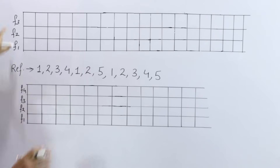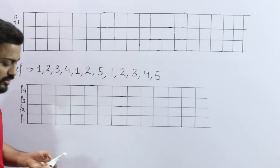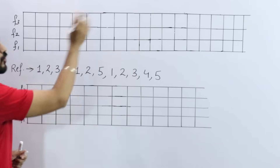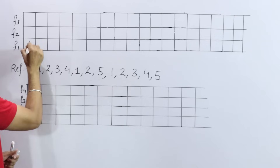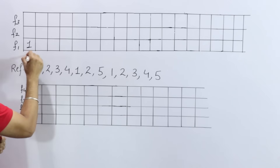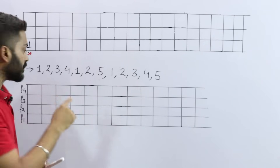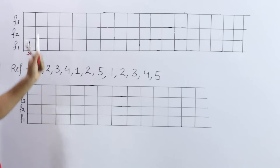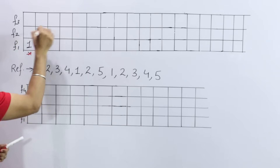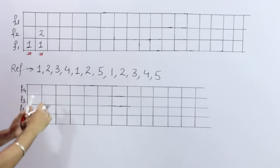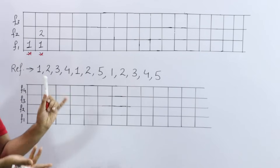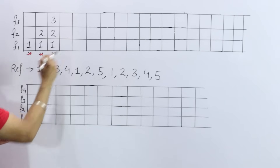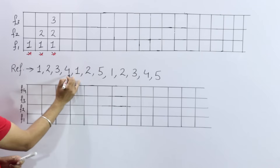In FIFO, first we check if page number 1 is already present. It is not, so we load it into main memory — this is a page fault. Then page number 2 is loaded — also a page fault. Then page number 3 is loaded — again a page fault. All three frames are now occupied.